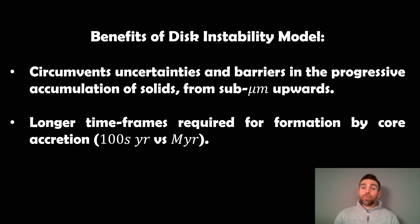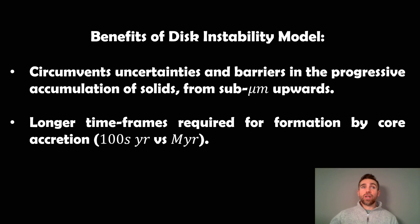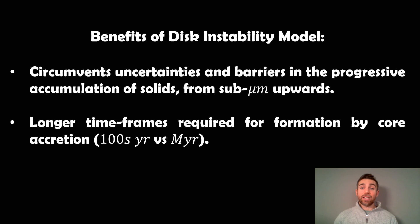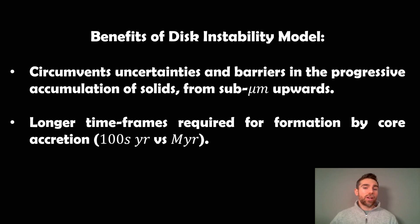The benefits of disk instability or disk fragmentation compared to core accretion is that it bypasses some uncertainties and barriers in the core accretion model. At certain particle sizes, instead of sticking to one another, particles will bounce off each other or fragment — that's a barrier in growth. There are large uncertainties around how you actually overcome that barrier in the required timeframes. Disk fragmentation can take around a hundred years compared to millions of years for core accretion — it's a very fast process.